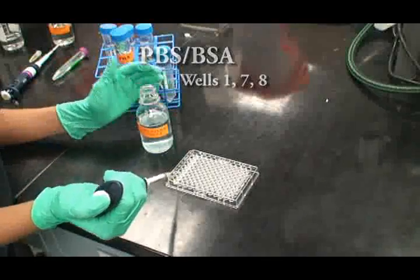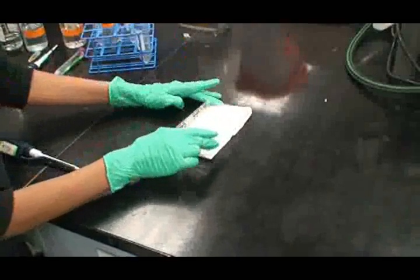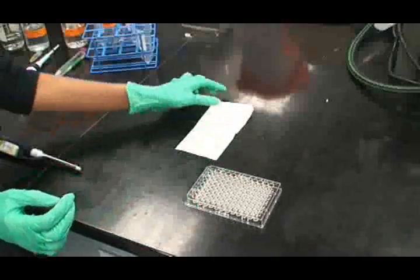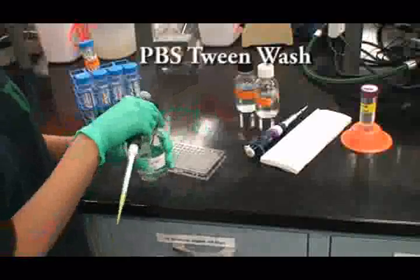Incubate for 30 minutes at room temperature. Empty your wells by inverting on a paper towel. Wash the wells you are using three times with 200 microliters of PBS-Tween wash solution. Empty the wells again on a paper towel.